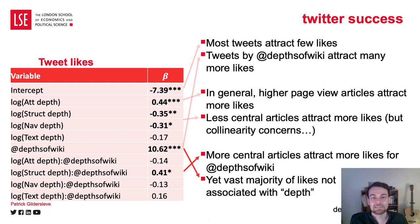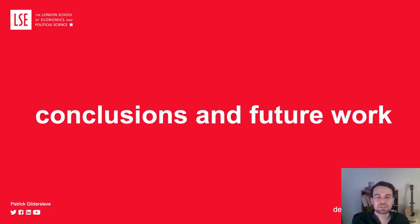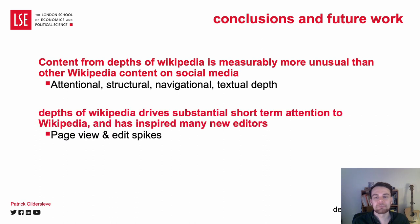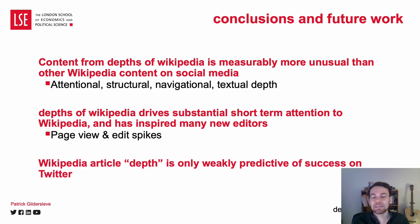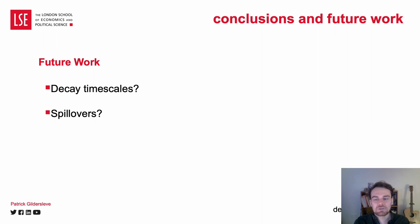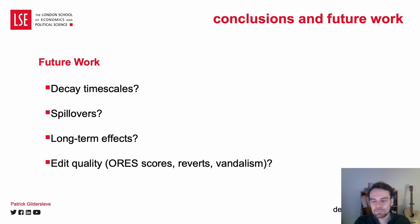The account's curation skills are more sophisticated. To conclude, and looking towards some future work: content from Depths of Wikipedia is measurably more unusual than other Wikipedia content on social media. Depths of Wikipedia drives substantial short-term attention to Wikipedia and has inspired many new editors. But Wikipedia article depth is only weakly predictive of success on Twitter. Future work could explore how Wikipedia page views and decay timescales might help reverse engineer the Twitter feed algorithm, spillovers of attention to articles not directly linked by Depths of Wikipedia, longer-term effects of articles being brought into the public consciousness, and edit quality after an article is featured — what kinds of edits are made and by what kinds of editors.